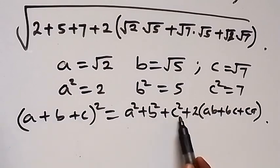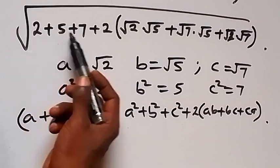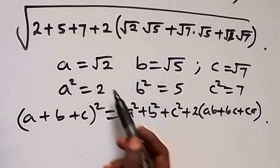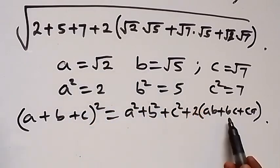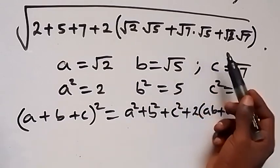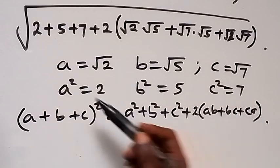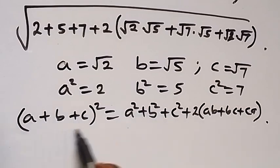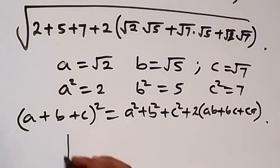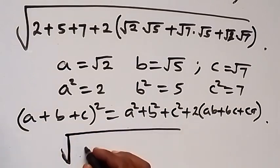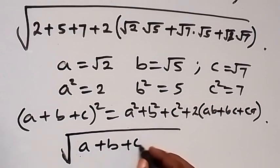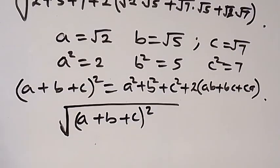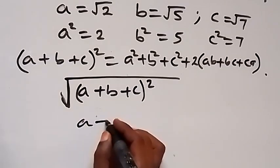What we have inside this root follows the right-hand side: a squared plus b squared plus c squared is 2 plus 5 plus 7, then plus 2 multiplied by ab which is root 2 times root 5, plus bc which is root 5 times root 7, plus ca which is root 7 times root 2. So we can write this as root of (a plus b plus c) squared, and taking the square root gives us a plus b plus c.